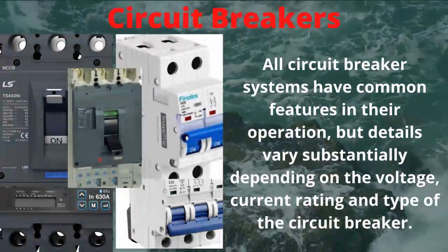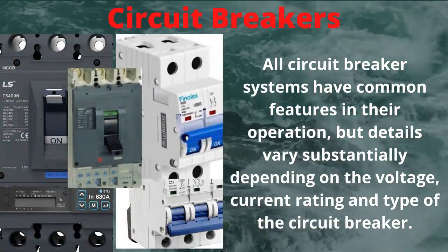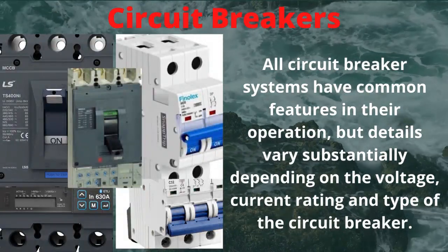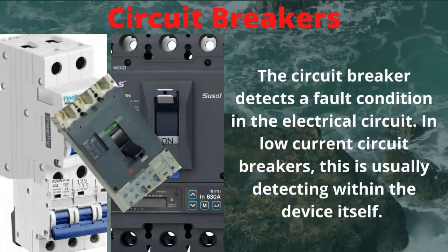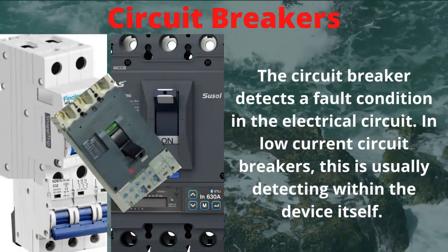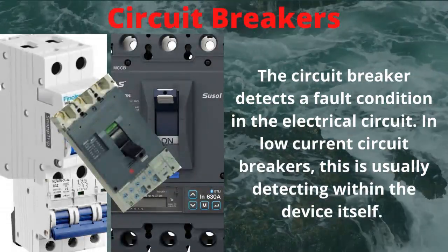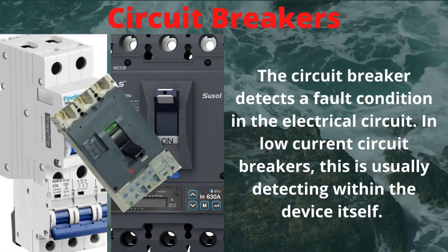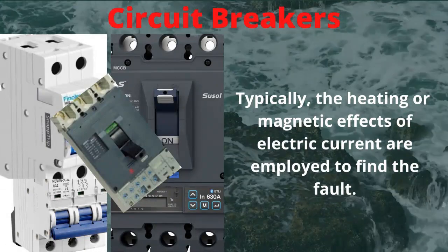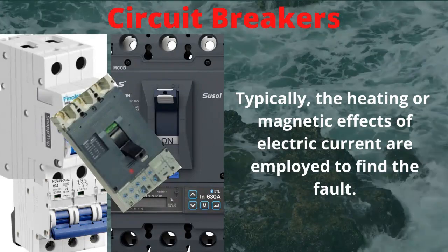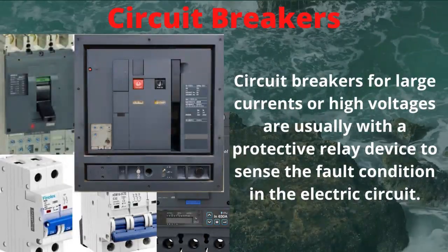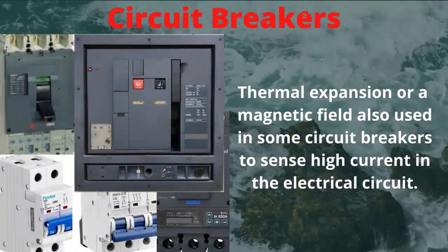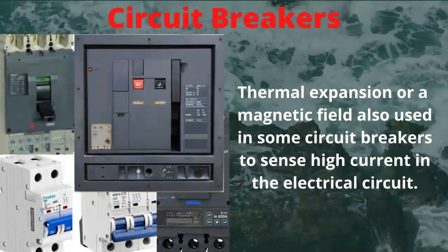All circuit breaker systems have common features in their operation, but details vary substantially depending on the voltage, current rating, and type of the circuit breaker. The circuit breaker detects a fault condition in the electrical circuit; in low current circuit breakers this is usually detected within the device itself. Typically the heating or magnetic effects of electric current are employed to find the fault. For large currents or high voltages, circuit breakers are usually paired with a protective relay device to sense the fault condition, and thermal expansion or a magnetic field may also be used to sense high current.